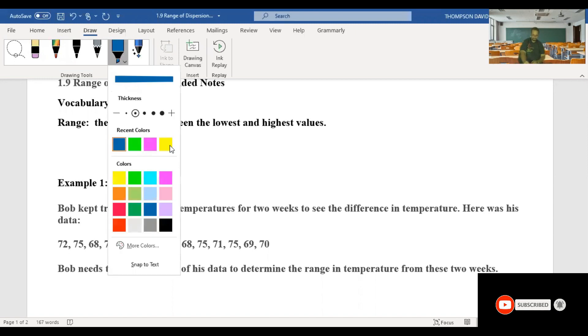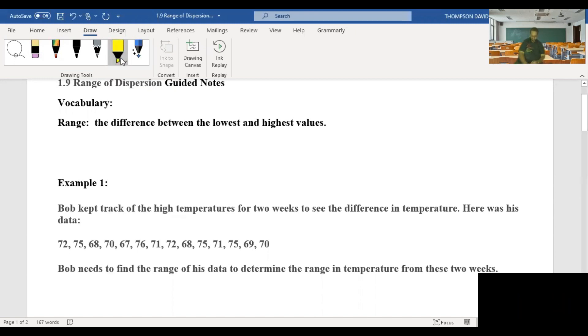So we'll highlight the largest number. It looks like it's going to be 75. We'll highlight that in yellow. And then let's find the smallest number. And this data set appears like the smallest. Oops, sorry. We do have one number larger than 75. It's 76.